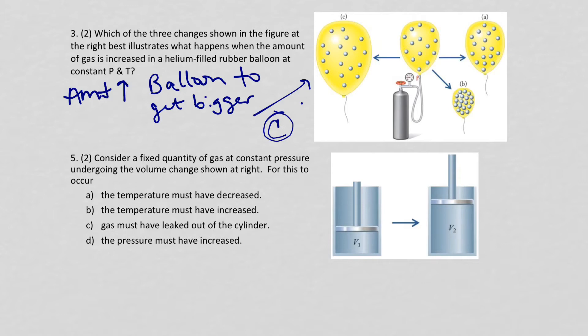Moving on from that question. Consider a fixed quantity of gas at constant pressure according to volume changes shown at the right. Constant pressure. So P stays the same. P stays the same. When the pressure stays the same, the only thing, when we have STP, we have pressure and temperature. So that means that if P is staying the same, temperature has to change.